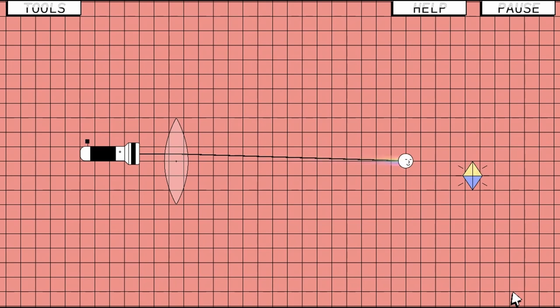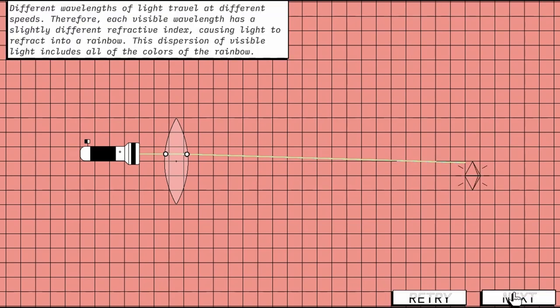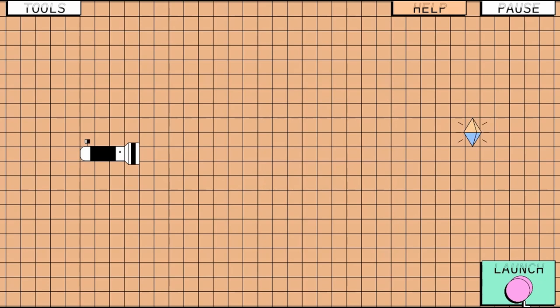Your goal is to use the tools like a concave or convex lens and a mirror to direct light to a specific target.